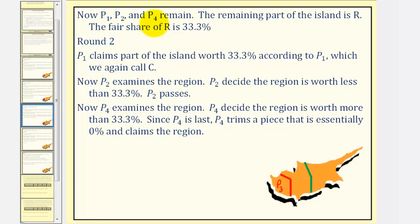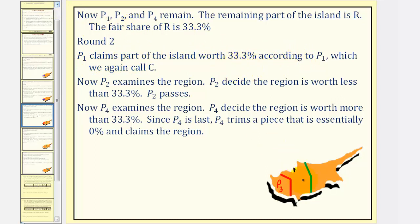Because there are only three players remaining, the fair share of the remaining piece of the island will be approximately thirty-three point three percent. For round two, it goes back to player one, who claims part of the island worth approximately thirty-three point three percent according to their value system, which we again call C.